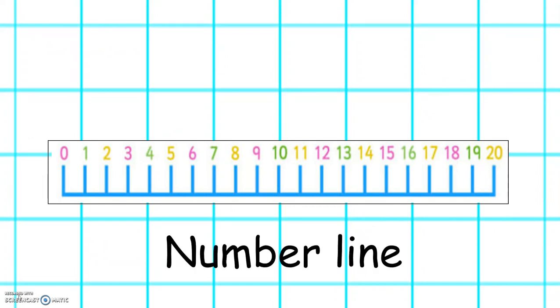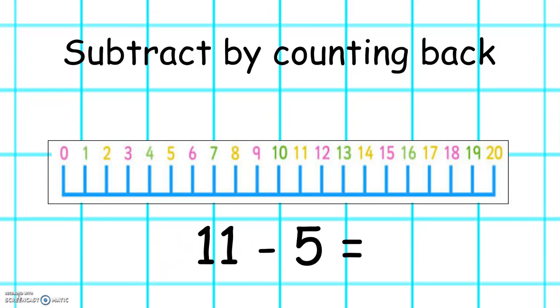One method we can use to subtract from 20 is to count back on our number line. Here we have to solve 11 take away 5. On our number line, we start on 11 and we count back 5.